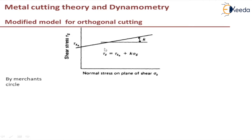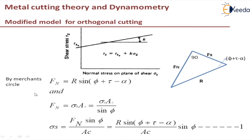From the Merchant circle, considering the relevant triangle, the normal force fn equals R·sin(φ + τ − α). As discussed in previous videos, fn is also equal to σs·(ac/sin φ). Rearranging, σs = fn·sin φ / ac.